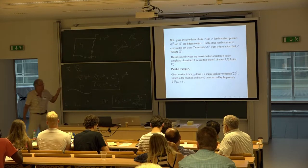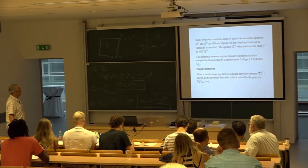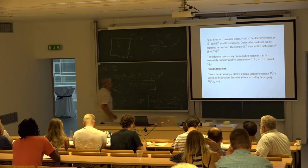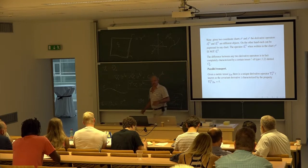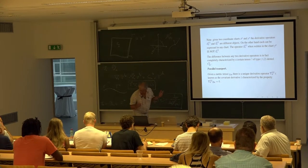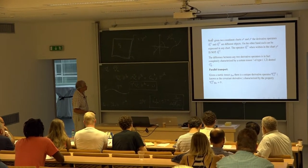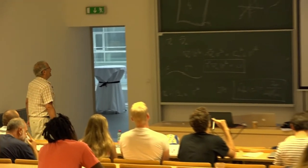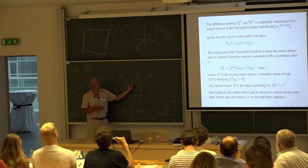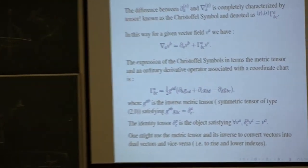This seems like a natural thing to do — to adapt your derivative operator to the metric. This derivative operator is known as the covariant derivative associated with the metric, and it is uniquely determined by the metric. Given any ordinary derivative operator and the derivative operator associated with the metric, their difference is given by something called the Christoffel symbol.